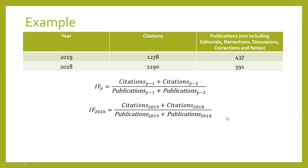We just go to our table and we can find all the values. Citations in 2019 is 1278, citations in 2018 is 1190, publications in 2019 is 437, and publications in 2018 is 391. If we substitute in those values we get 1278 plus 1190 divided by 437 plus 391.